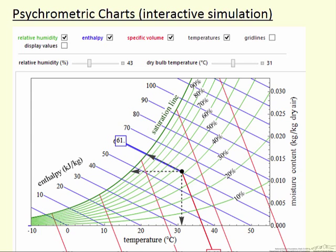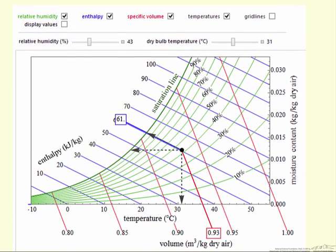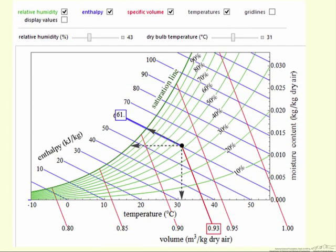What we're going to look at here is a snapshot of the interactive simulation where the x-axis is the dry bulb temperature, the y-axis is moisture content, so the fraction, this is kilograms of water per kilogram of dry air.